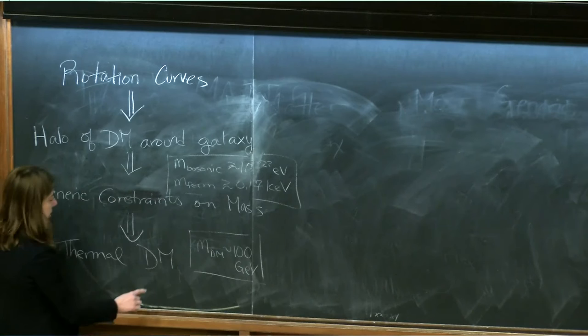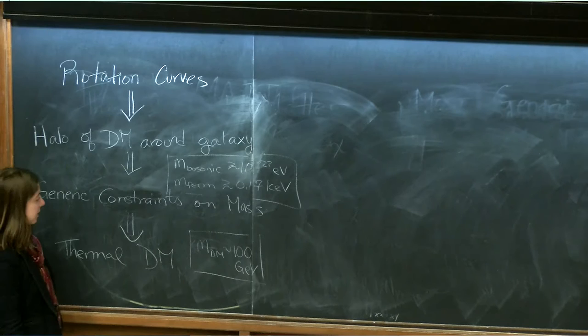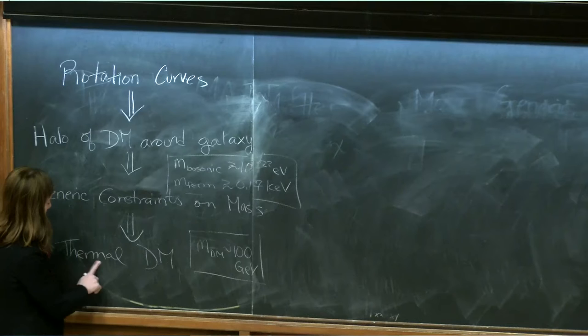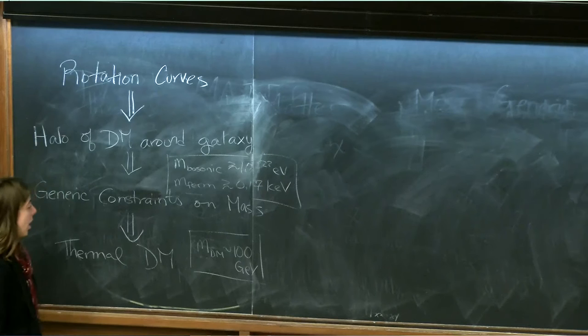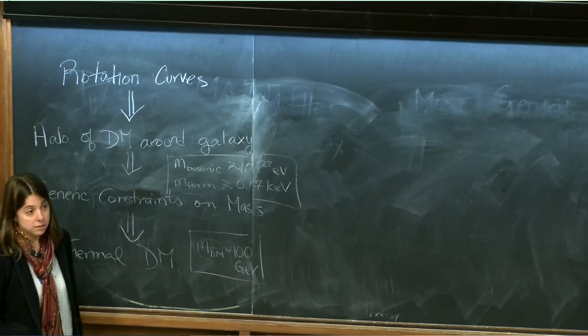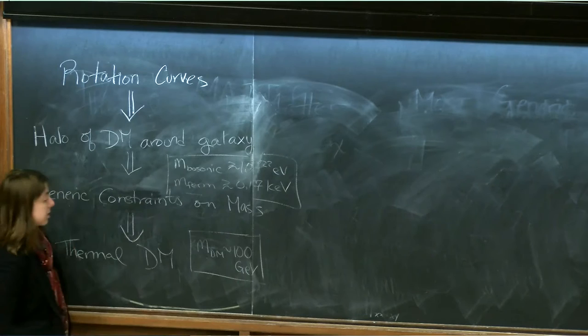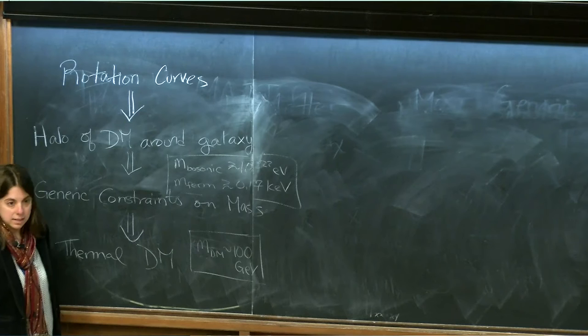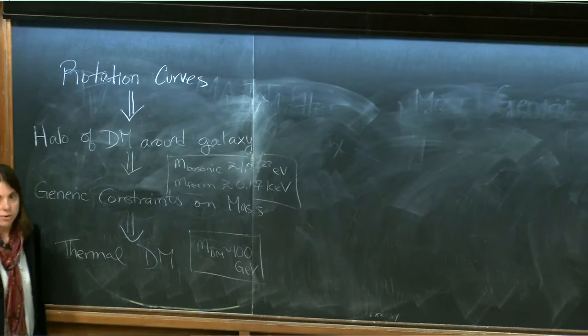There are a lot of caveats that come with this. We don't have to do much to change the thermal dark matter picture to get different mass scales. But I want to focus on the weak scale picture for now, mainly because it's played such an important role in designing experiments to test for dark matter. What we're going to do now is discuss some classes of these experiments and tell you what the current status is in terms of testing this hypothesis.